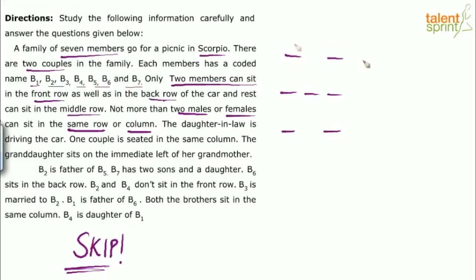In the front row there cannot be more than 2 males or 2 females, but there are only 2 seats anyway. In the middle row there are 3 seats, so all 3 cannot be males or all 3 females — maximum 2 males or 2 females are allowed. The back row also has only 2 seats. If you look at the columns, both columns have 3 seats each, so even in those columns maximum 2 males or 2 females are allowed. You need to keep all these conditions in mind.